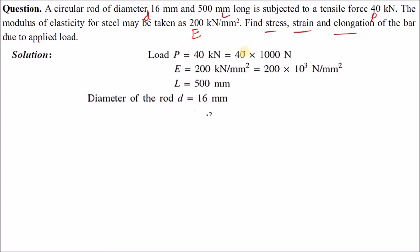Load is 40 kilo Newton, which you can write as 40 × 10³ Newton. Young's modulus, or modulus of elasticity, E equals 200 kilo Newton per mm² = 200 × 10³ Newton per mm². Length L and diameter D are also given.